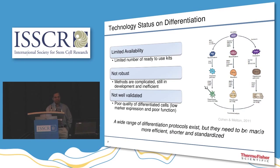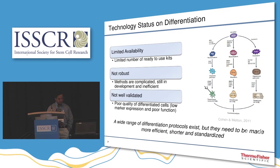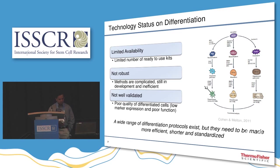Looking at the technology status in differentiation, there are very limited ready-to-use kits available. Many researchers have their own home-brew methods, which differ from one researcher to another, and reproducibility is a huge issue. Methods are complicated — some step-by-step, some sequential, some parallel — and many are still in development. A lot of protocols are inefficient, poorly validated, have very low marker expression, and show really poor functionality of the cells.